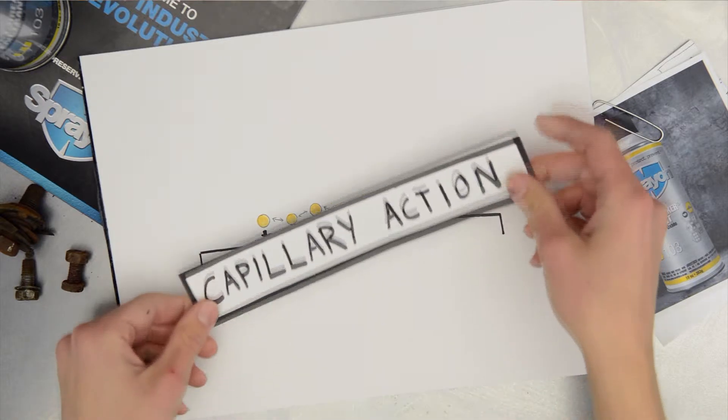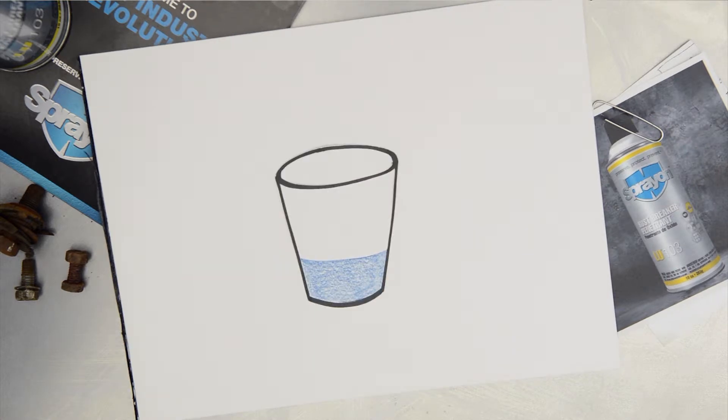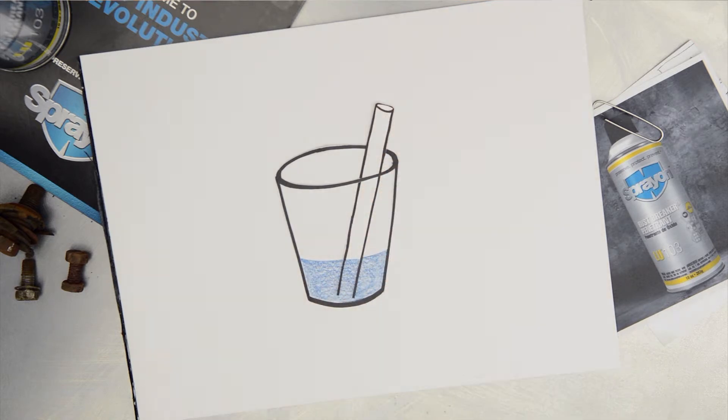This results in what is called capillary action. We've all seen capillary action in our everyday lives. It's the force that pulls water slightly higher inside a drinking straw inserted into a glass. The adhesion of the water to the walls of the straw causes an upward force on the liquid at the edges. And since the surface tension of the water wants to hold the surface intact, instead of just the edges moving upward, the whole liquid surface is dragged upward.